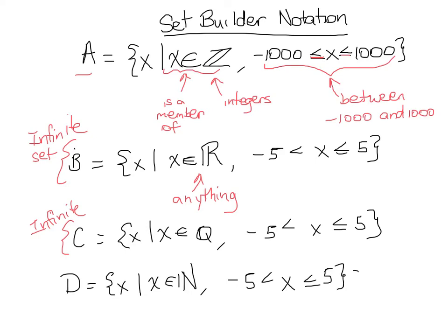We totally could list natural numbers between negative 5 and 5. Natural numbers, as you may recall, are positive whole numbers.